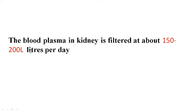Some important features to remember for MCQ questions: blood plasma in the kidney is filtered at about 150 to 200 liters per day. Remember that — 150 to 200 liters per day is the filtration capacity of the kidney.